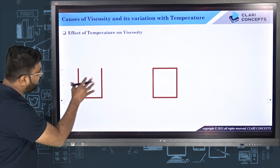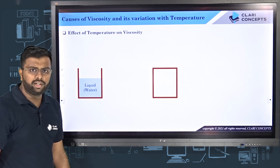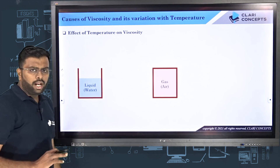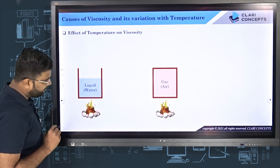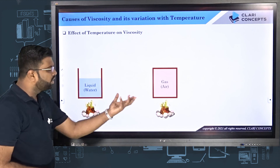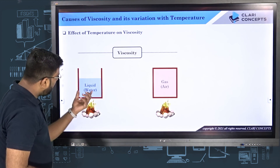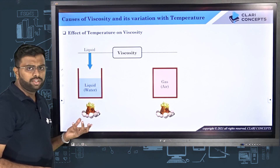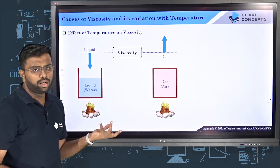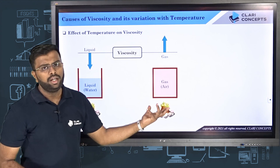Let's say I have two different vessels — one open cylindrical vessel containing liquid, basically water, and another closed vessel containing a gaseous element, which is air. Now I will heat both these fluids — one liquid and one gas. What I have observed is that when I heat both these fluids and measure the viscosity afterward, the viscosity of water, which is a liquid, has reduced because of heating. On the other hand, the viscosity of gas has actually increased because of heating — because of the increase in temperature. The question is: why do these fluids behave differently when temperature is raised?